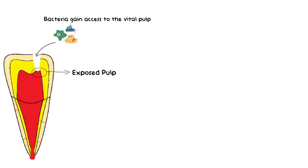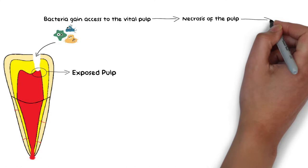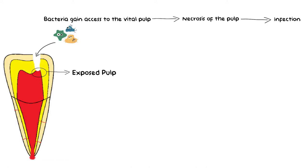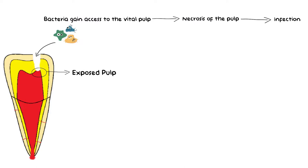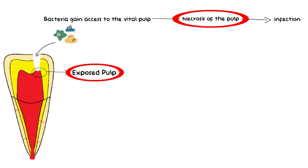Once bacteria gain access to the pulp, they can easily divide and multiply because of the rich nutritious environment of the pulp. Because of a heavy bacterial attack, the pulp undergoes necrosis, after which bacteria are free to divide and establish an infection in the root canal system. In order for bacteria to establish an infection in the root canal system, the bacteria must first gain access to the vital pulp, after which the pulp will undergo necrosis. Pulpal exposure as well as pulpal necrosis are therefore two very important factors for infection of the pulp or the root canal system.